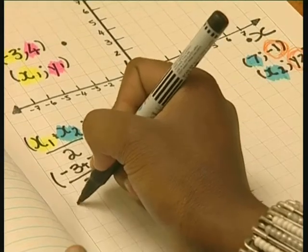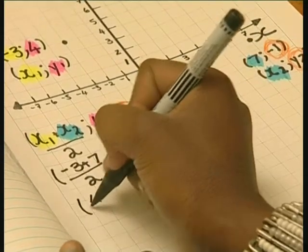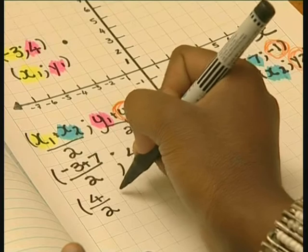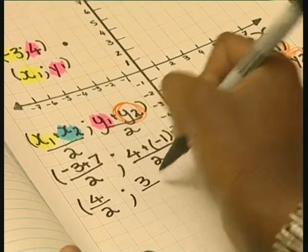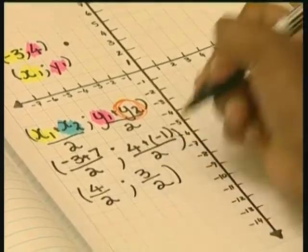Now what I do is work out each part and I get four divided by two for the x-coordinate. So that's two, and three divided by two which is one and a half.